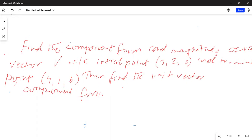So v is equal to 3 minus 4, 2 minus 1, and 0 minus 6. Or v is equal to 3 minus 4 is minus 1, 2 minus 1 is 1, and 0 minus 6 is minus 6. This is the vector between those two points.